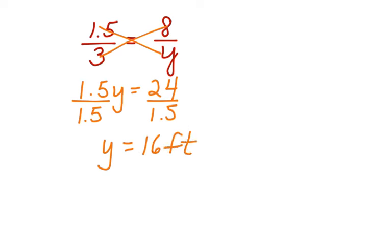Now, we have one more ratio. We have 1.5 over 3 is equal to 12 over Z. Multiply across. 1.5Z is equal to 3 times 12, which is 36.